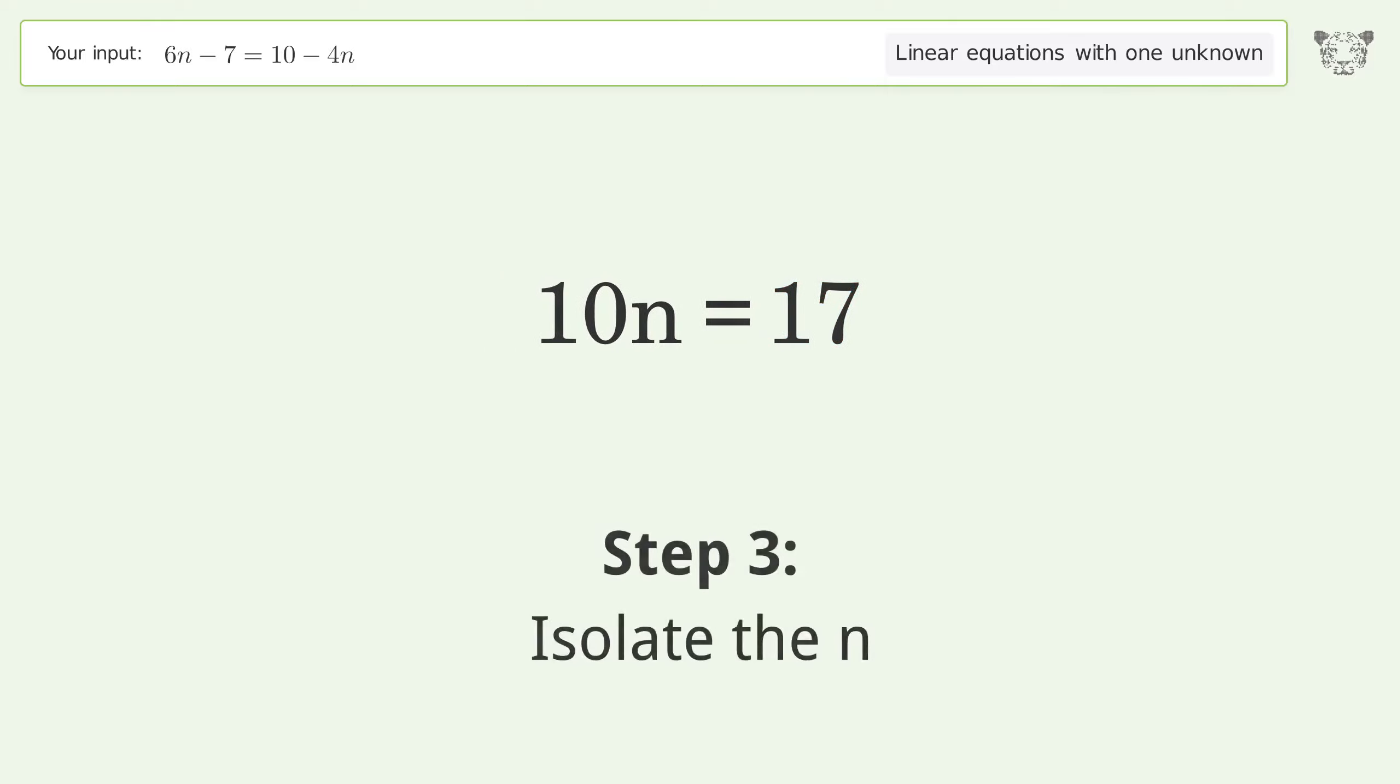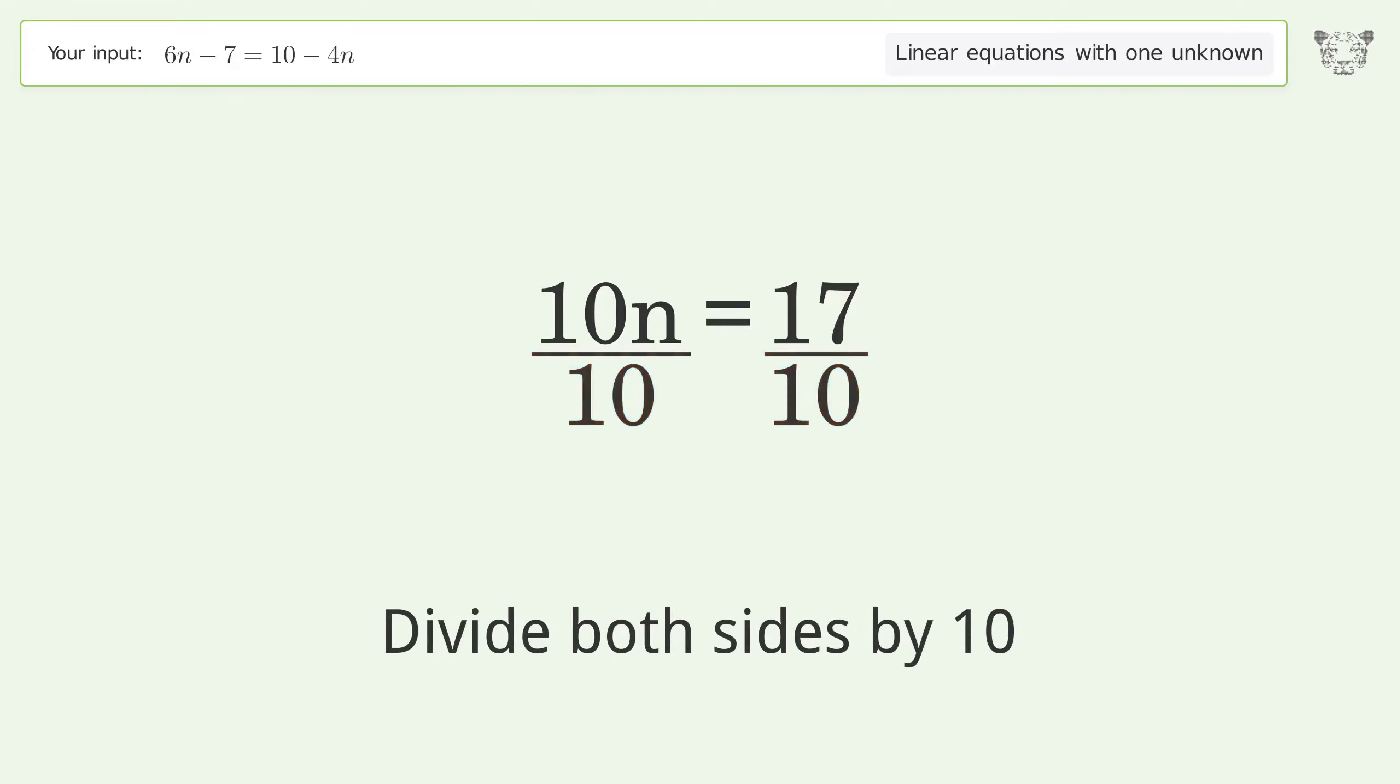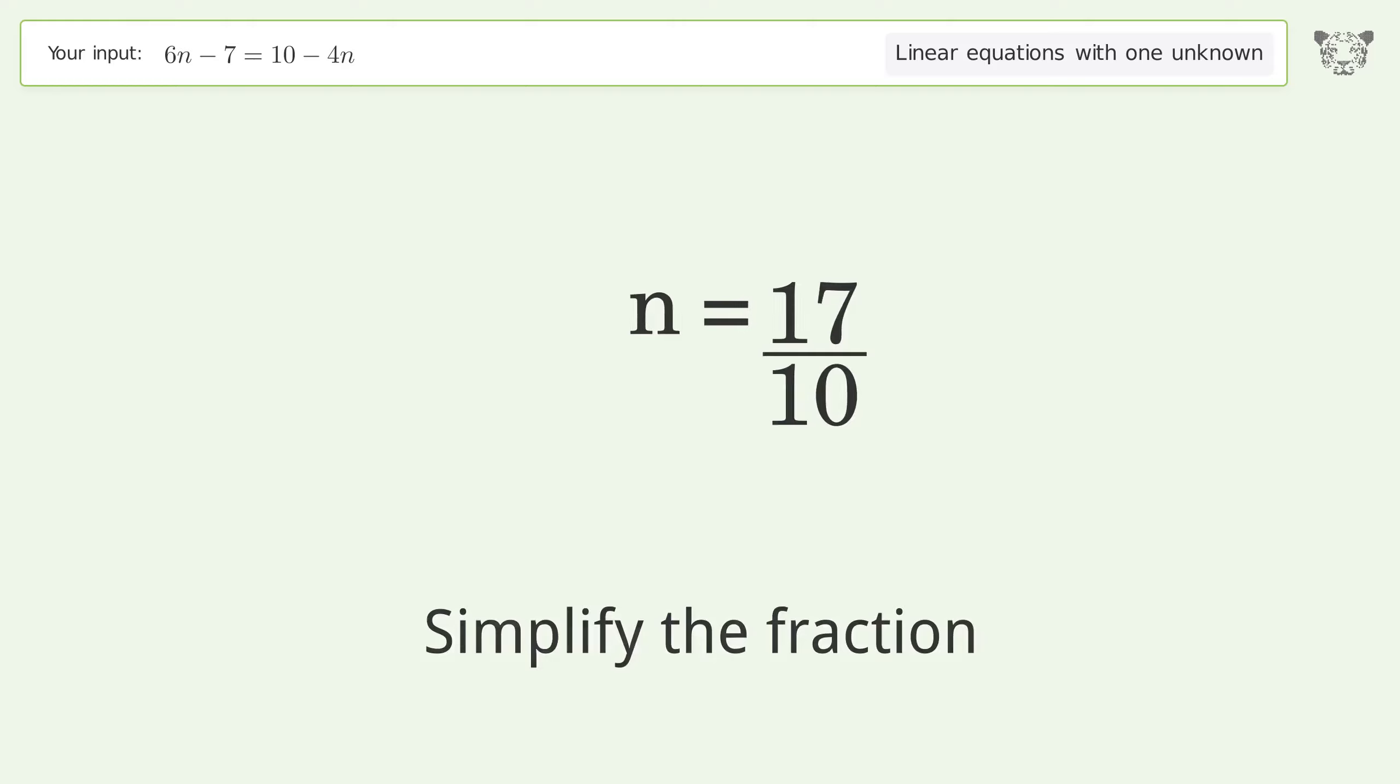Isolate the n. Divide both sides by 10. Simplify the fraction. And so the final result is n equals 17 over 10.